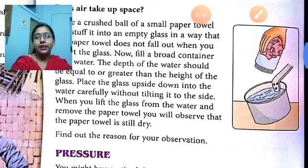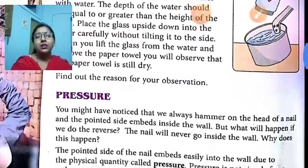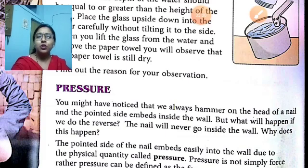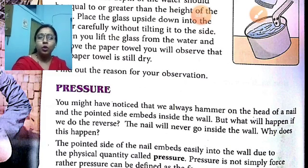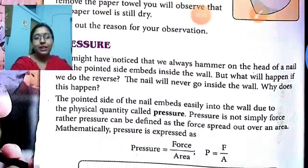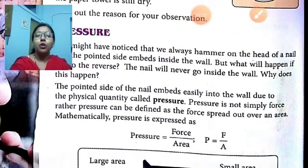Now let's come to the topic of pressure. You have noticed that when we hammer the head of the nail, the pointed side embeds into the wall. But what will happen if we do the reverse — if we hammer the pointed side and keep the flat side on the wall? The nail will not go inside the wall. This happens because the pointed side of the nail embeds easily into the wall due to the physical quantity called pressure.